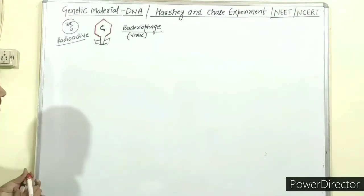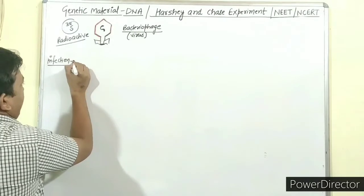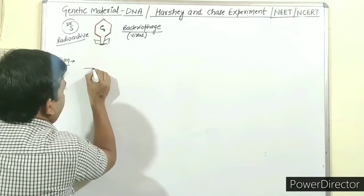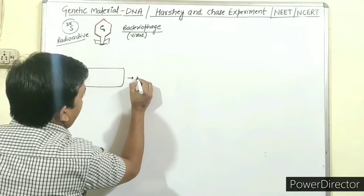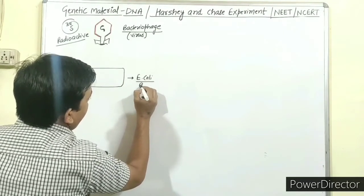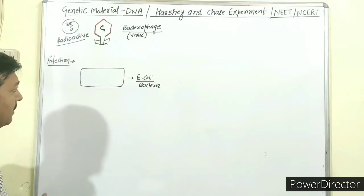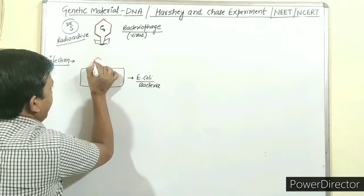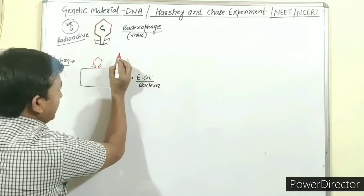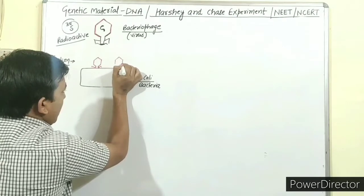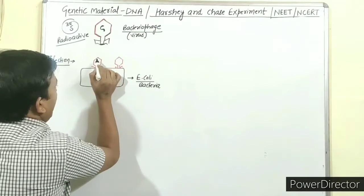Now what we will do is add this virus to bacteria. We will add E. coli bacteria. We have infected the E. coli bacteria with the T2 bacteriophage. This is the DNA of the virus.